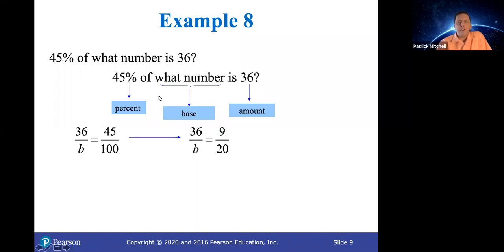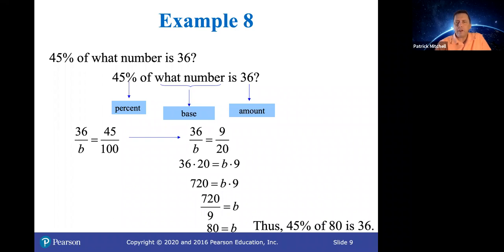If you were to cross multiply in this proportion and then solve it, you would still get the right answer. Probably just trying to keep us in the habit of simplifying our fractions. So now when we cross multiply, we get 36 times 20 equals b times 9. 36 times 20 is 720. And if we divide both sides by 9, we get that b is 80. So 45% of 80 is 36.